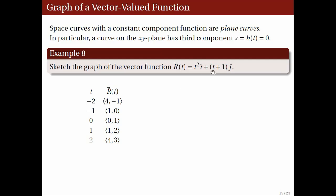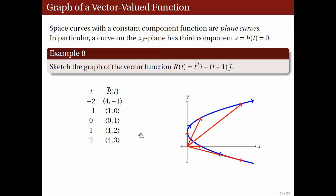When t equals −2, the î component is 4 and the ĵ component is −1, and similarly for the other vectors. We take the position representations of these vectors — the initial point is at the origin, so the terminal points have coordinates equal to the components of the corresponding vectors. So we have the points (4, −1), (1, 0), (0, 1), (1, 2), and (4, 3), generating the blue curve.